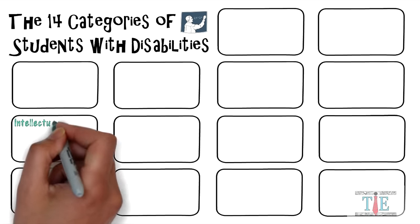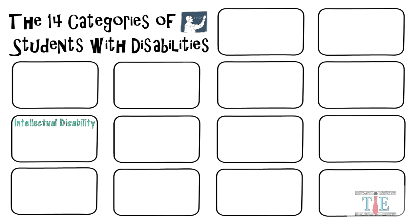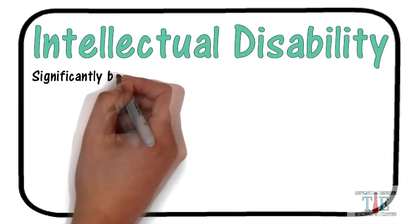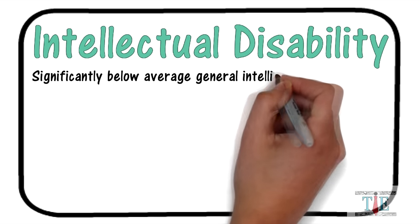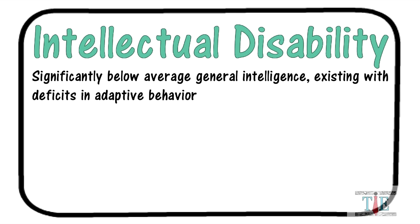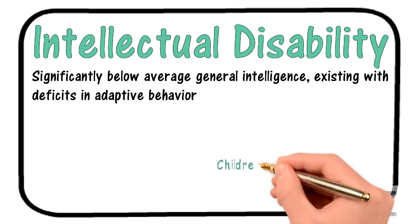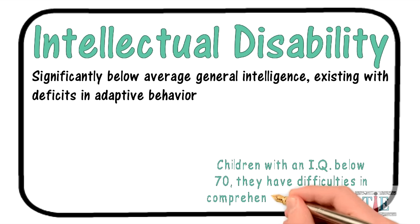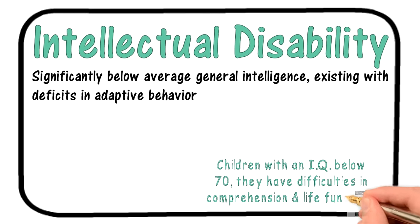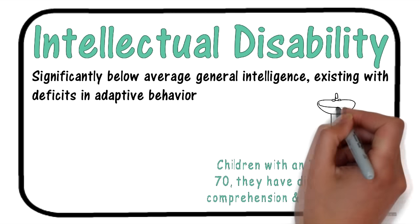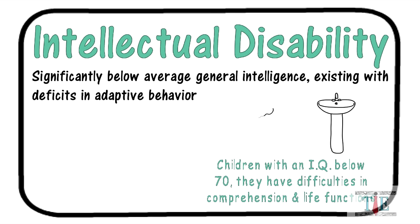We'll begin with the first category on the list: intellectual disability. Intellectual disabilities can be defined as significantly below average general intelligence, existing with deficits in adaptive behavior. Children with this disability have an IQ below 70. They also have difficulties in comprehension and life functions. These children may have difficulties with simple tasks, such as washing their hands.